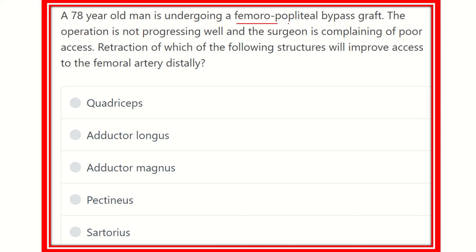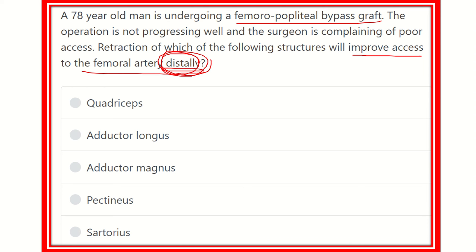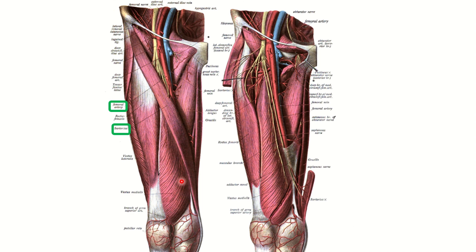So we need to identify which structure, when retracted, will improve access to the distal femoral artery. The femoral artery is most accessible in the femoral triangle, so we need to identify what covers the femoral artery distally. The options are: adductor longus muscle, adductor magnus muscle, pectineus, and sartorius.